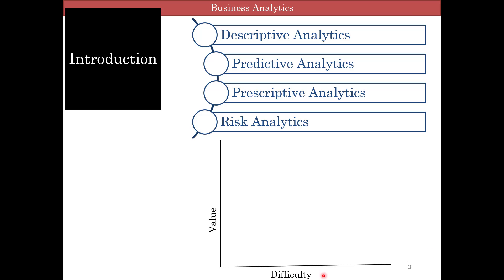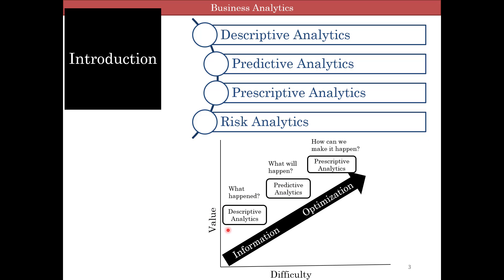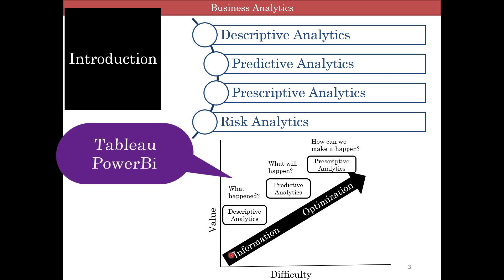If you take a look at this graph, where the x-axis is the level of difficulty and the y-axis is value, we're trying to convert data into information which we can act on, and then move to optimization which has more value and a higher level of difficulty. Optimization will allow us to make the best decisions possible given the data. Descriptive analytics is pure information — what happened? A lot of companies are in this realm. When you hear people talk about Tableau or Power BI, they're really talking about a toolset to describe and visualize your data.